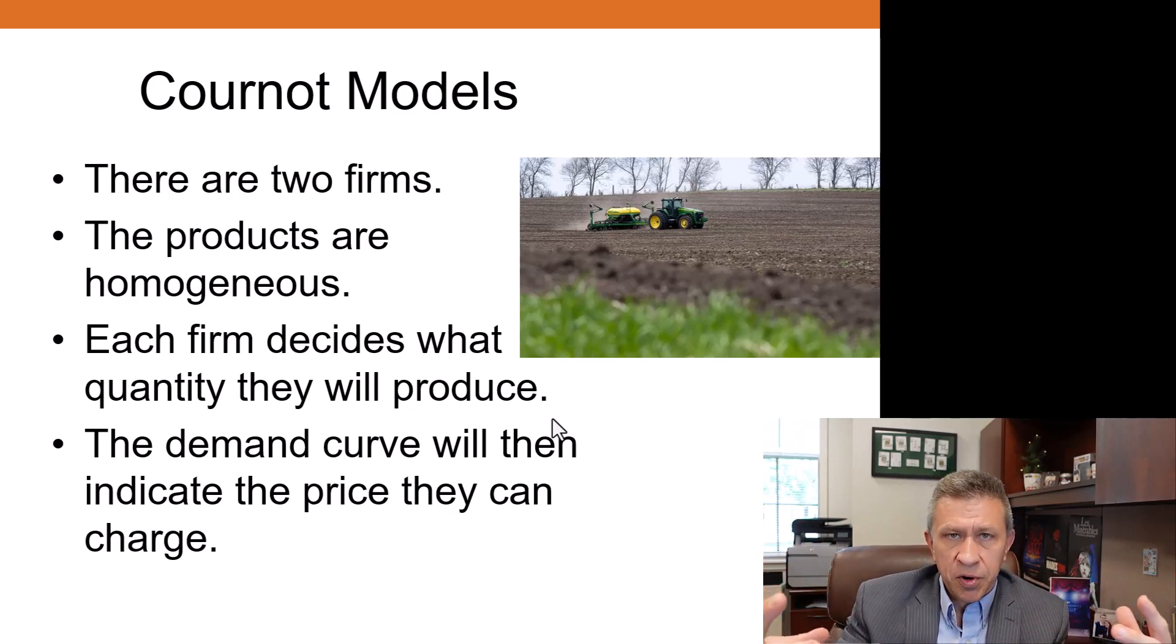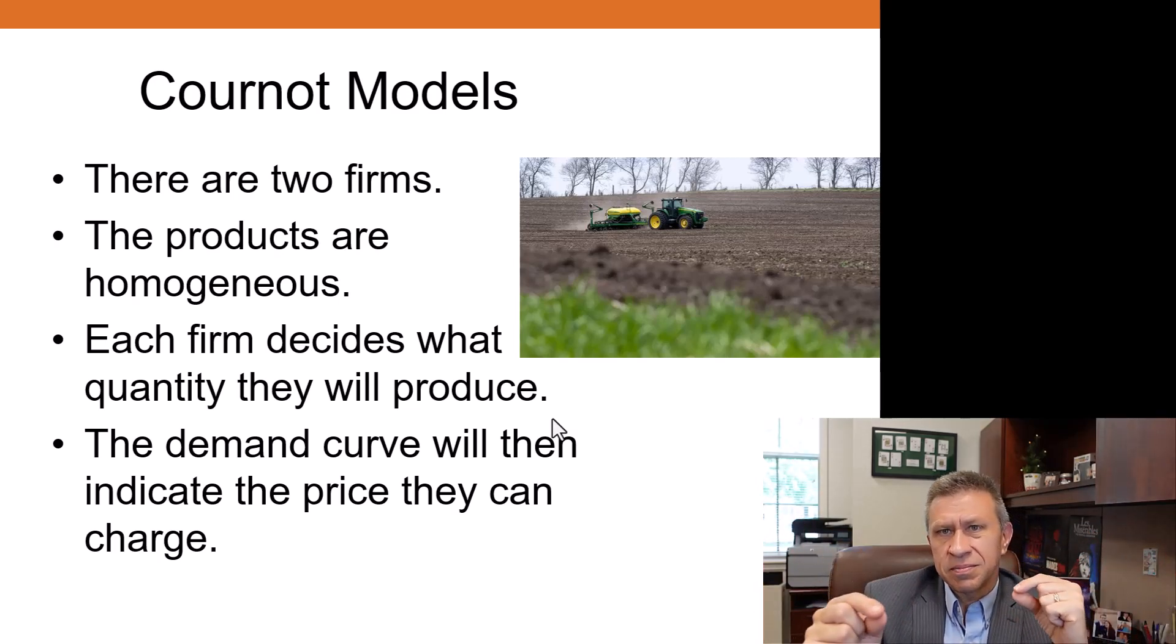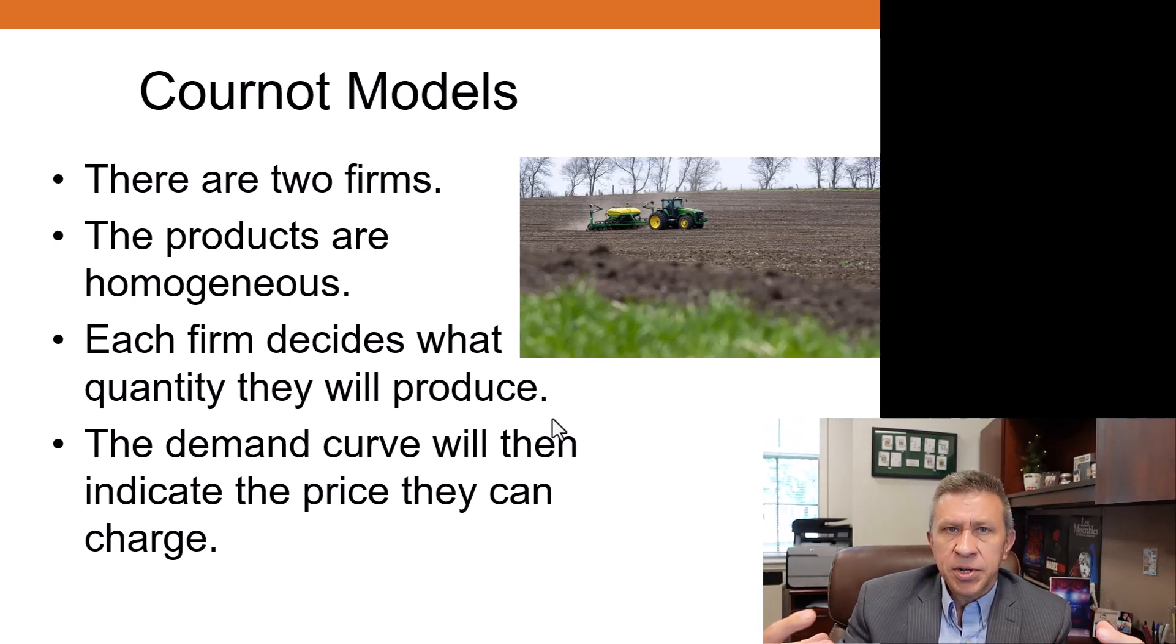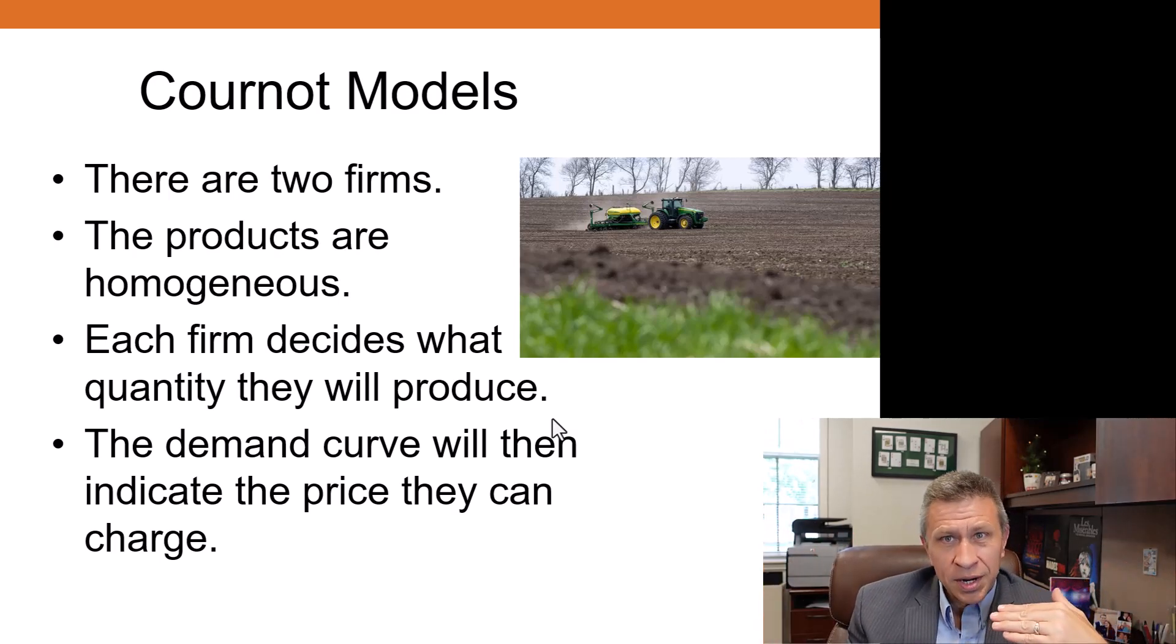In farming markets there are more than two, but thinking about the decisions farmers make makes a lot of sense. You're making a decision on how much to produce, then all of the products are brought to the market and then sold. The market demand determines what the price is based on the quantities that each firm has brought to a particular market.